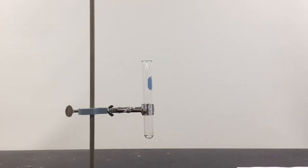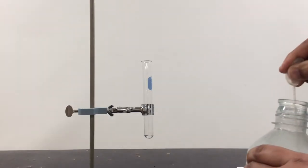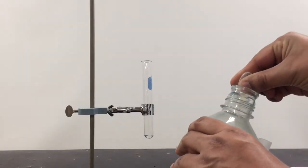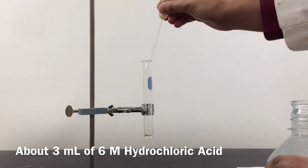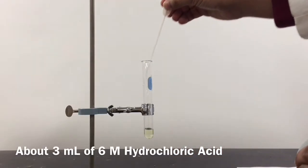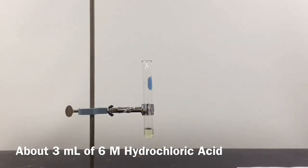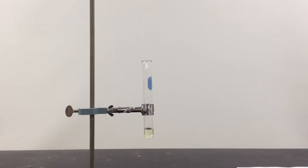This time I have a test tube set up here, and I'm going to add just a few milliliters of hydrochloric acid. This particular acid has a concentration of 6 moles per liter, so it's pretty concentrated.